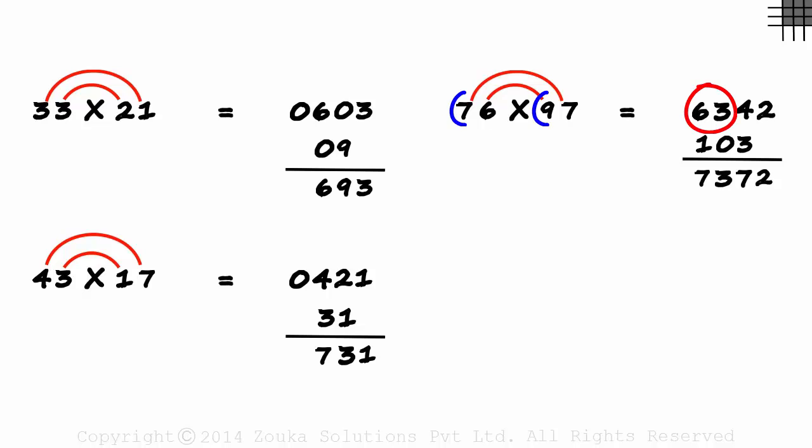63 is the product of the first digits of each number. 42 is the product of the second digits of each number. And 103 is the sum of the product of these two and the product of these two numbers.